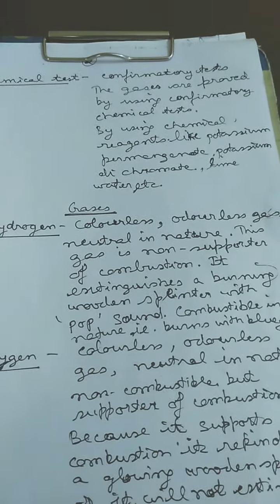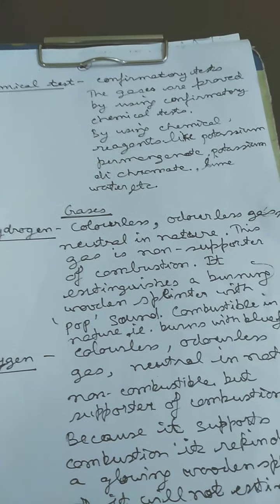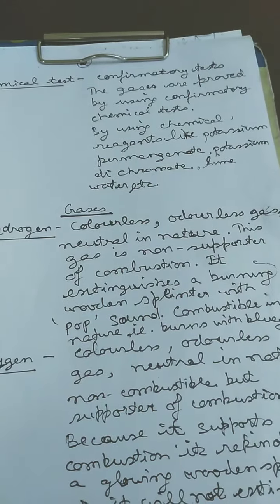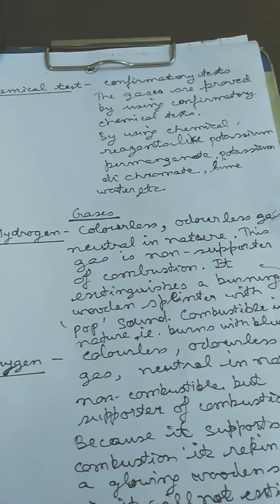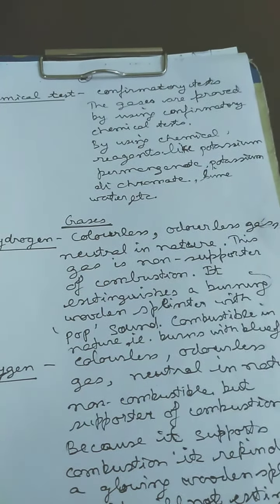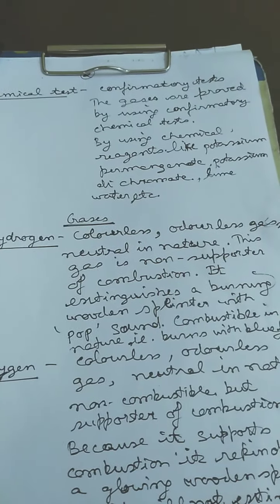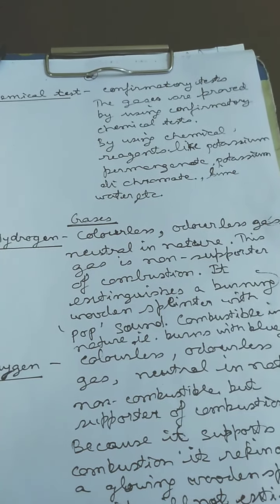Next is the chemical test. Chemical tests are the confirmatory test. The gases are proved by using confirmatory chemical test or we finally come to a conclusion that the particular gas is this one gas by using a particular chemical reagent. Some of the chemical reagents which we use are potassium permanganate, potassium dichromate, lime water etc.